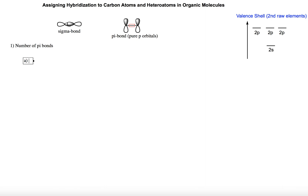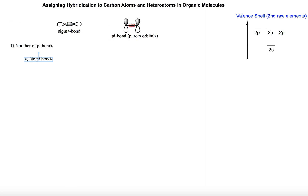The first case we often find is atoms with no pi bonds. When we have atoms with no pi bonds — for carbon, oxygen, or nitrogen — it means all four orbitals in the valence shell will be used for sigma bonds. According to hybridization, the atom will hybridize its four atomic orbitals to form four hybrid orbitals. Combining one s and three p, we get SP3 hybridization. SP3 hybridization gives a tetrahedral geometry with a bond angle of 109.5 degrees.